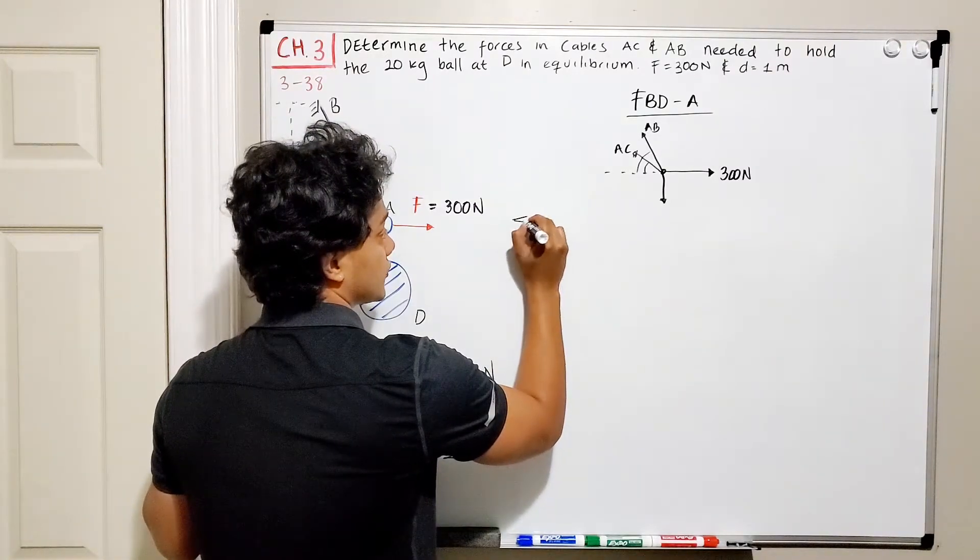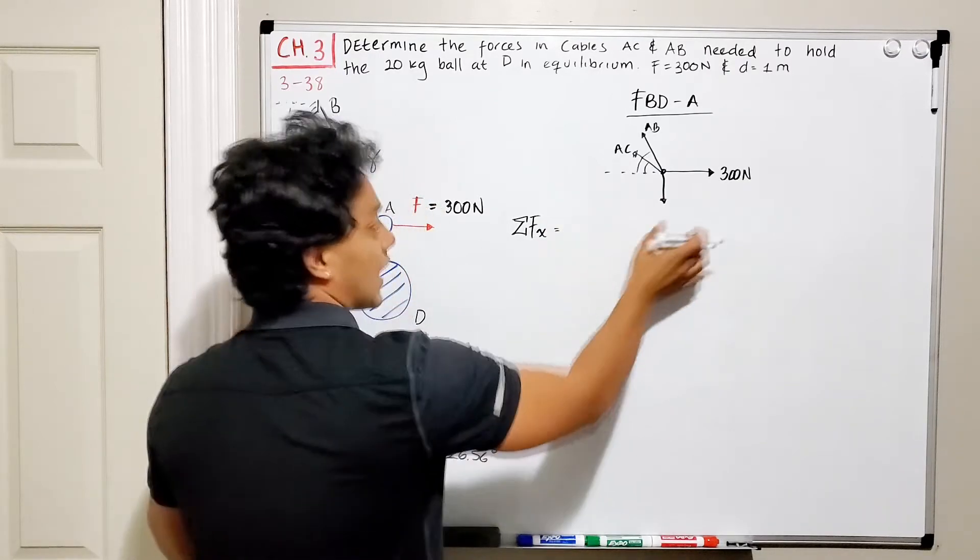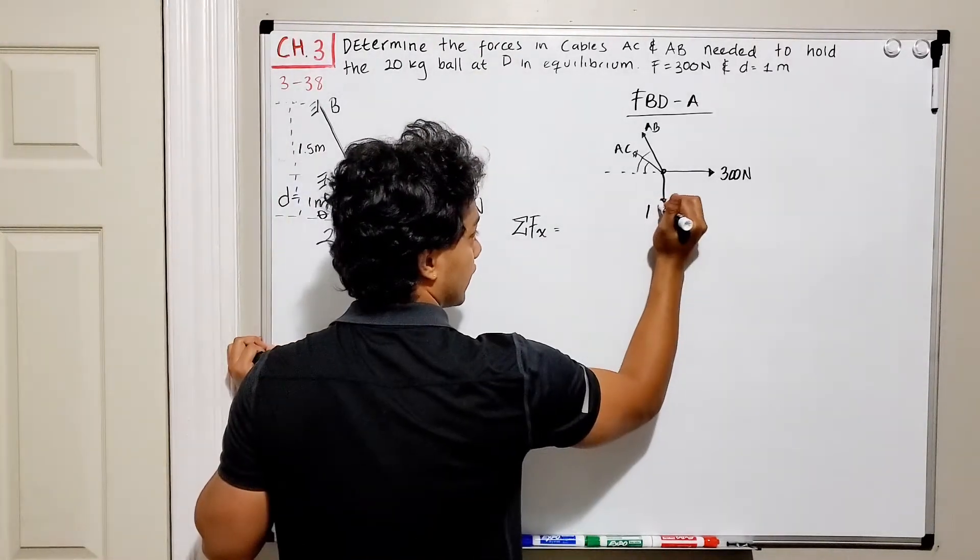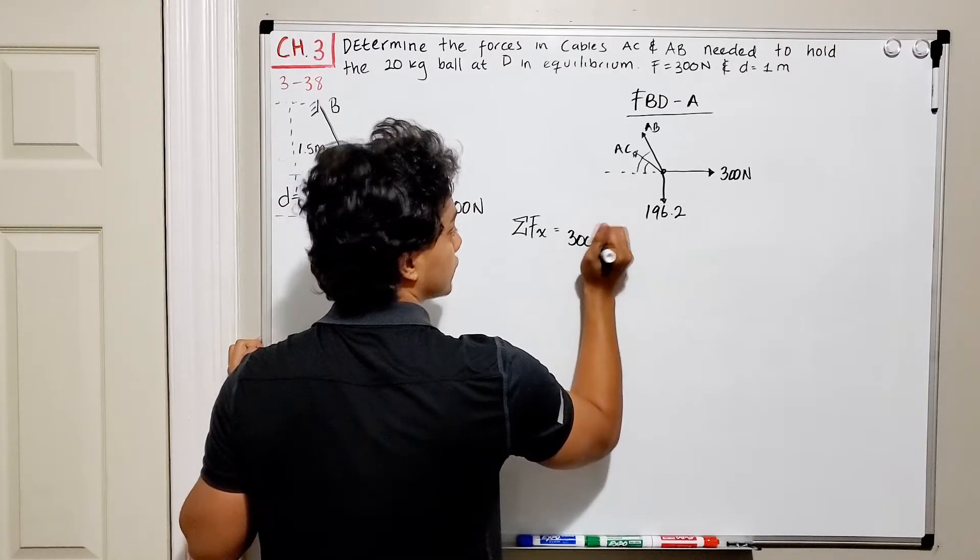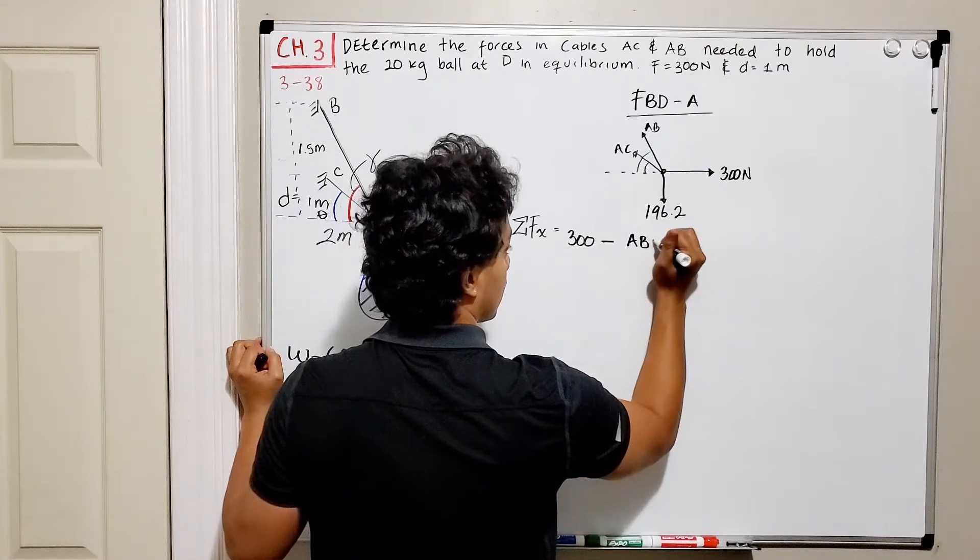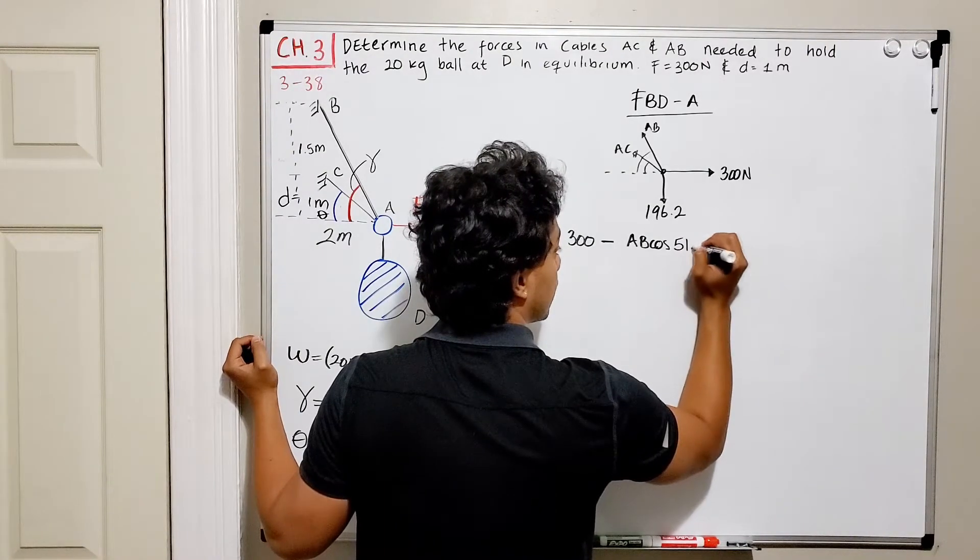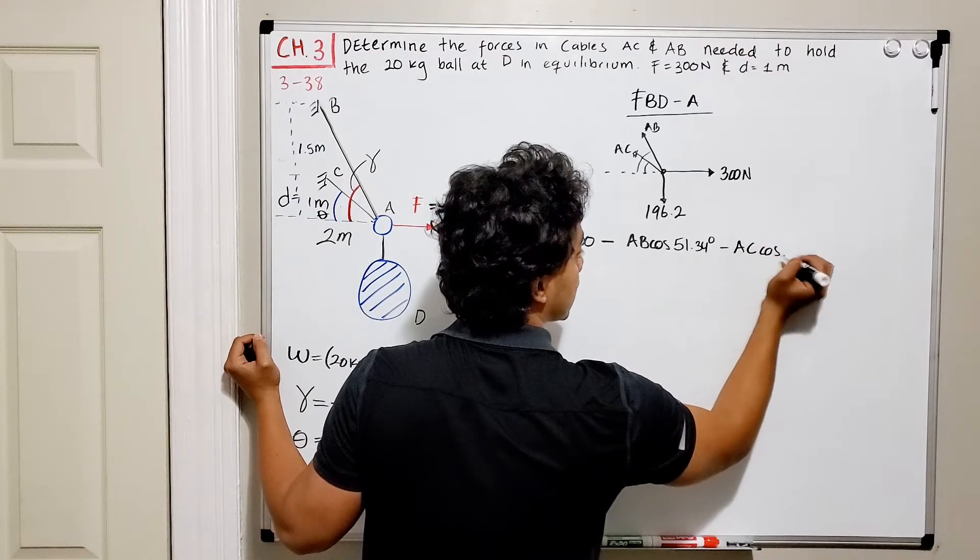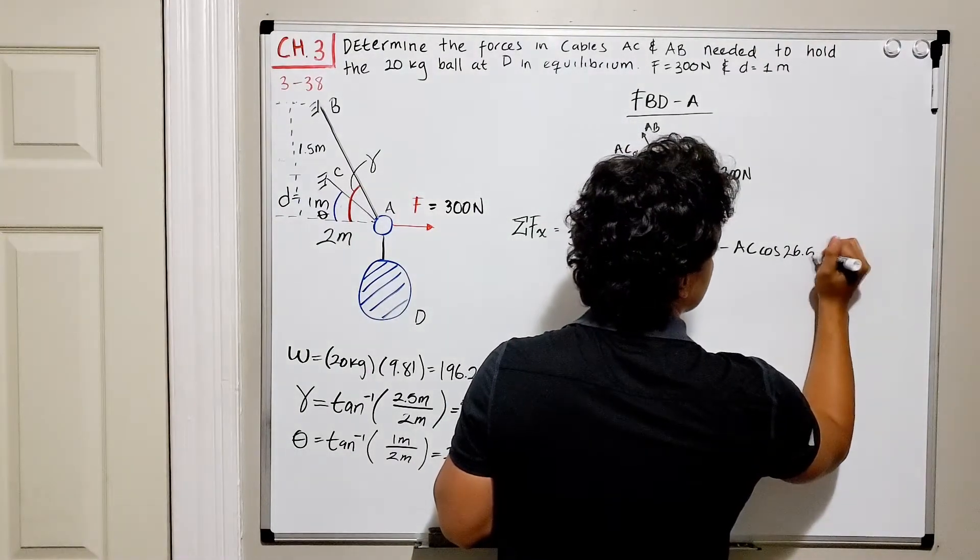So let's do the forces in equilibrium. We got the summation of forces in the x direction. We have 300 newtons going to the right. Let's don't forget that this guy is 196.2. So we got 300 newtons minus AB cosine of its angle, so for AB is gamma, 51.34 degrees, minus AC multiplied by the cosine of 26.56. This should be all equal to zero.